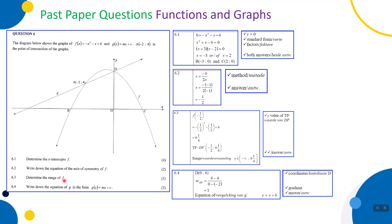6.3: determine the range of f. We need the y-value of the turning point. We already have x = -1/2, so substitute back: f(-1/2) = -(-1/2)² - (-1/2) + 6 = 6¼. The turning point is (-1/2, 6¼). The range is y ≤ 6¼, or written in interval notation: (-∞, 6¼]. You get a mark for the y-value of the turning point and two marks for the answer.